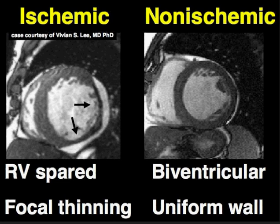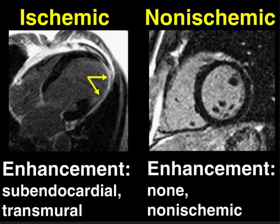To answer that question, we turn to what we know about ischemic and non-ischemic dilated cardiomyopathies. We know that ischemic dilated cardiomyopathy generally affects the left ventricle to a much greater extent than the right, and that in virtually all patients they've had some prior infarctions, leading to regions of focal wall thinning. Non-ischemic dilated cardiomyopathies, on the other hand, generally involve the right ventricle to the same extent as the left, and while the myocardium may be thinned, it's generally uniformly thinned without any focal thinning.